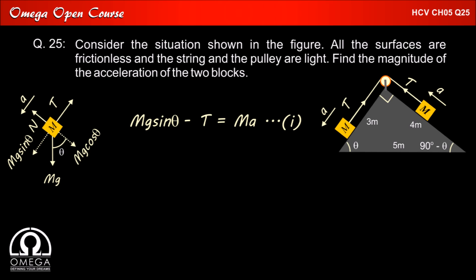In the free body diagram of the other block, gravitational force mg will act downwards, tension T up the incline, and normal N' perpendicular to the incline. Block will move up along the incline with the acceleration a.